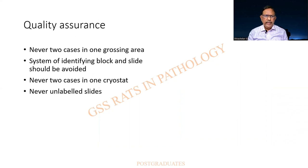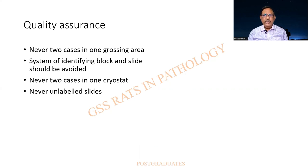Quality assurance: never two cases in the same grossing area. Sometimes we might have it, but never panic — it is your domain and you are the ruler. There has to be a system of identifying the block, numbering, and never two cases in the same cryostat. If there are many, as in a cancer hospital, let there be so many cryostats, so many technicians, as well as pathologists if needed. Never take unlabeled specimens. You can add this quality assurance if you get it as a question.